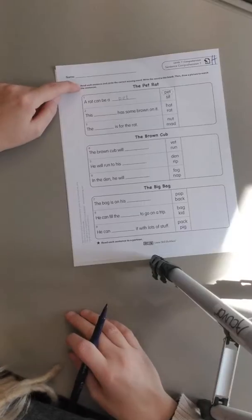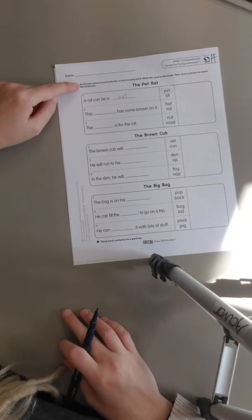It says read each sentence and circle the correct missing word. Write the word in the blank, then draw a picture to match the sentence.